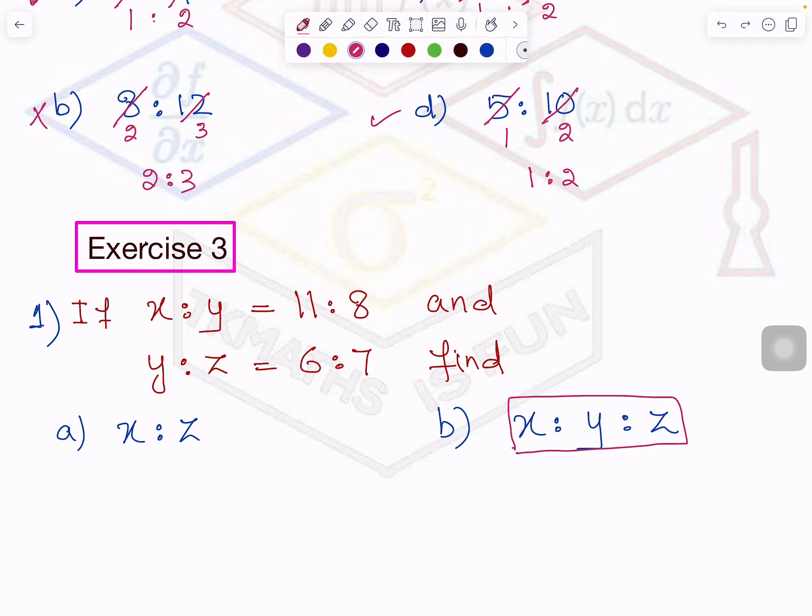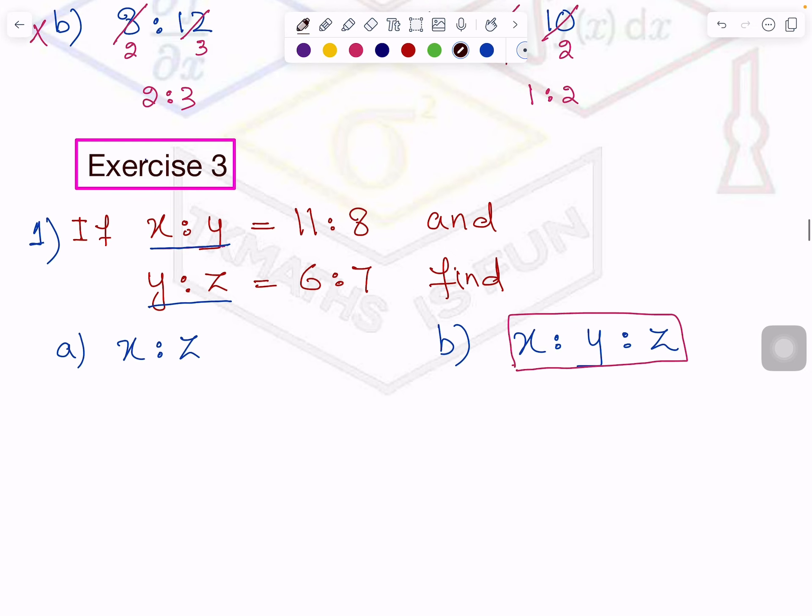So my focus will be on this type, x is to y is to z. And how do you do it? If you see in the given question, x is to y is given to you. x is to y is given and y is to z is given.